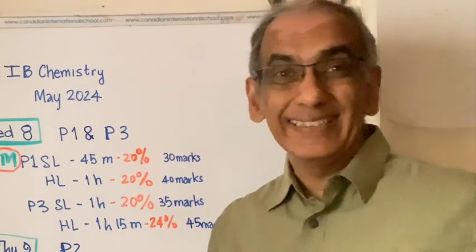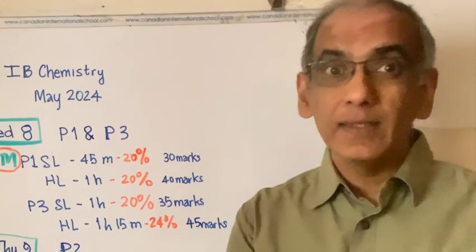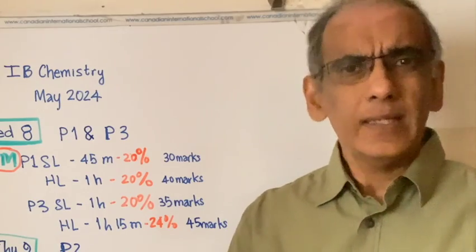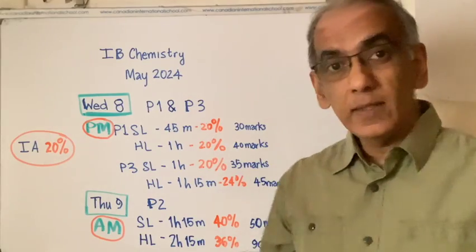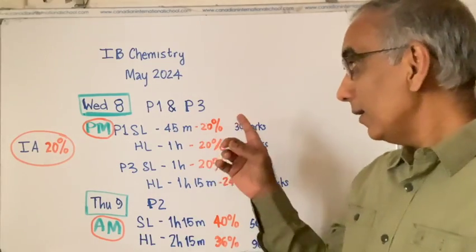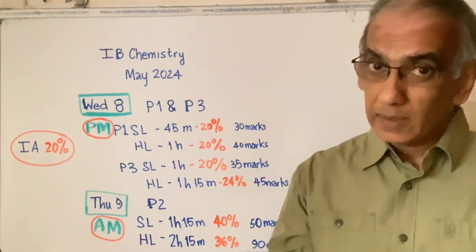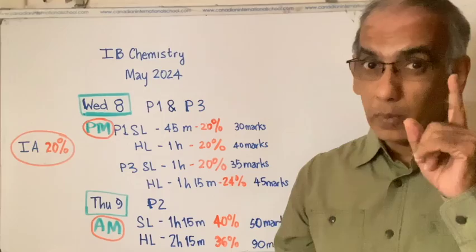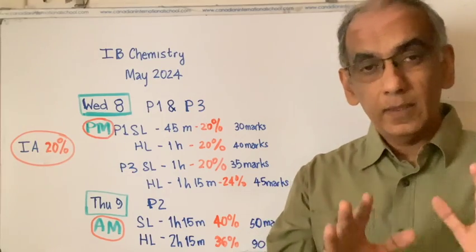Hello and welcome again. The IB Chemistry exam for May 2024 is happening in just over 10 days from today. On Wednesday the 8th of May in the afternoon, students, HL and SL, you'll be taking paper 1 and paper 3 on that afternoon.